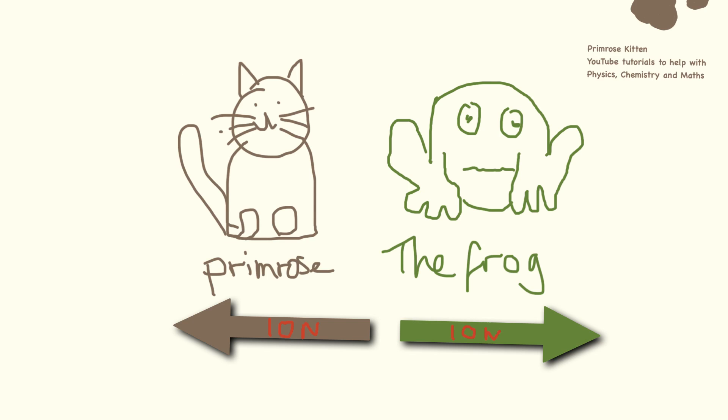So for this, I'm going to say that this side of the paper is positive and this side of the paper is negative. It doesn't mean that there's positive or negative values, I'm just giving them a direction to make the maths a bit easier. Here we have Primrose's arrow again, and I've given that a value of 10 newtons and I've given the froggy a value of 10 newtons.